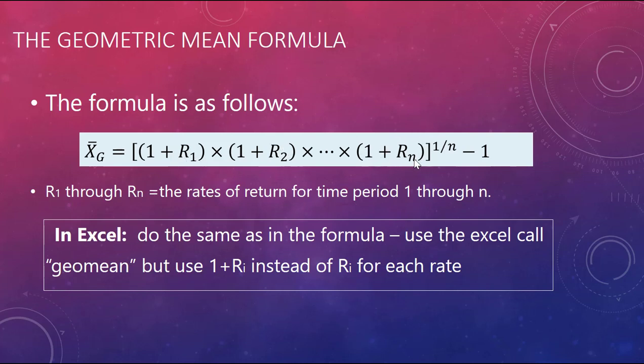These R1 through Rn are the rates of return, for example, if this is money, the rate of return of your money or your investment for each time period. So you take each of those rates, add one to it, and then times that sum by 1 plus all of the other rates for all of the other periods. You do that for all of the time periods.